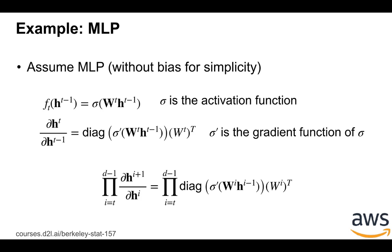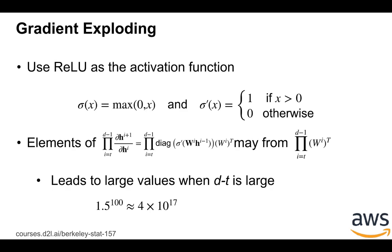And then we compute the gradients of the dense layer function, which is simply just the W^t transpose. So then applying the chain rule, we know that we want to do d minus 1 multiplications, that is a product of d minus t diagonal matrices, and also a bunch of weight matrices as well.